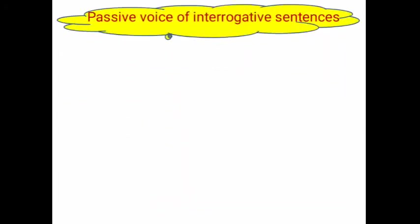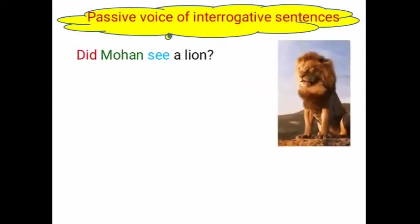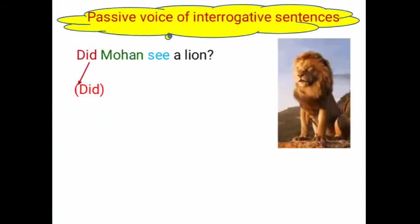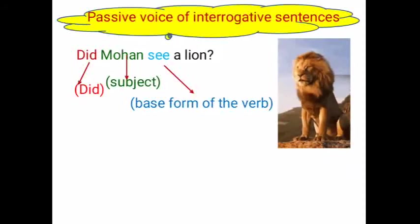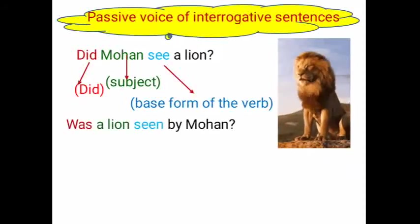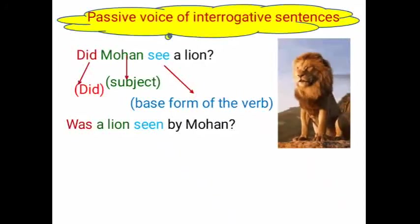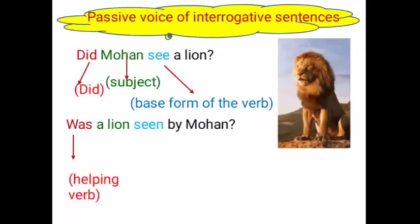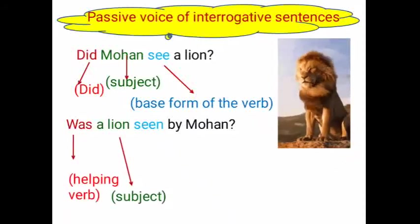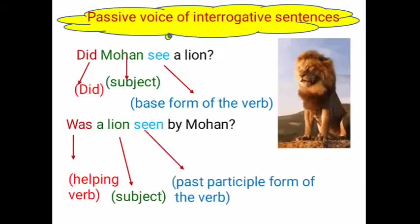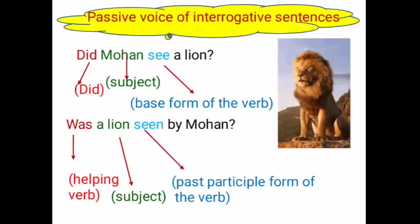Passive voice of interrogative sentences: 'Did Mohan see a lion?' — the question begins with 'did', then the subject, then the base form of the verb. In passive voice this becomes: 'Was a lion seen by Mohan?' Since the sentence is in past tense, we begin with the helping verb 'was'. Here 'a lion' is the subject and 'seen' is the past participle form of the verb.